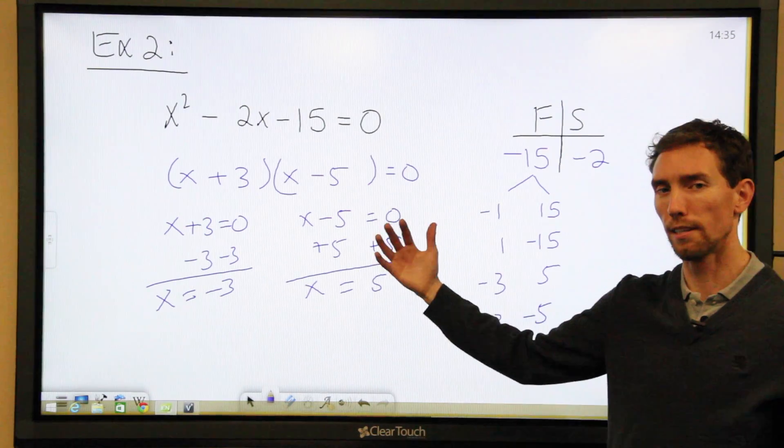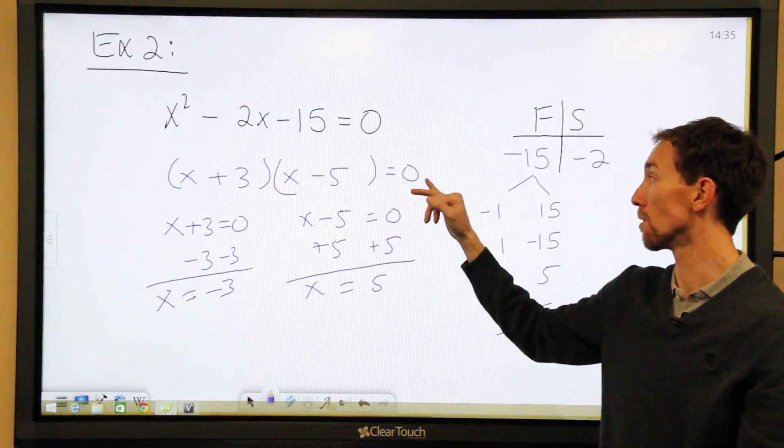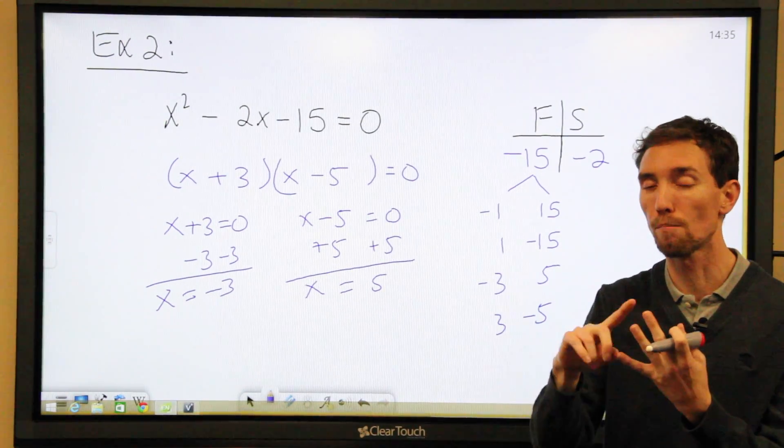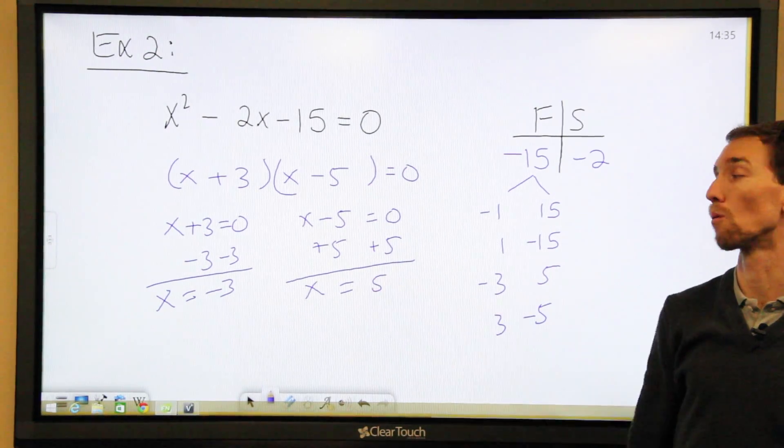So the reason we're doing this, I don't think I mentioned that, is because if you have two numbers that multiply together and you get zero, that means either one of them has to be zero or both of them have to be zero. That's why we're setting both sides, because we can have either or answer.